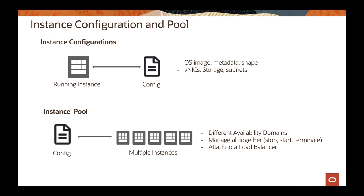When you do that, you can put those instances on different availability domains. So if you created a running instance on availability domain one, you can now deploy multiple instances spread across availability domains inside of the region. You can manage all of them together — stop, start, or terminate all those instances at once, so you don't have to go one by one. You can stop or terminate all instances with just one single click.